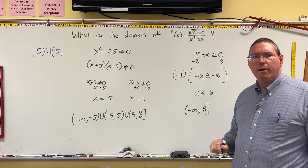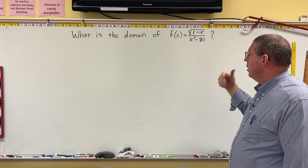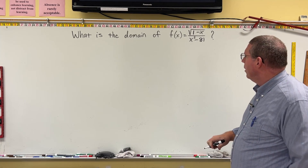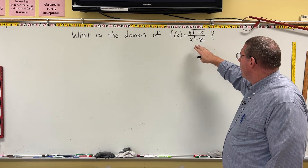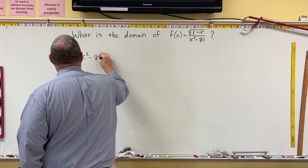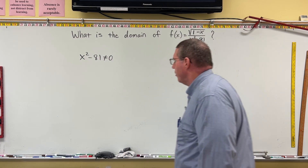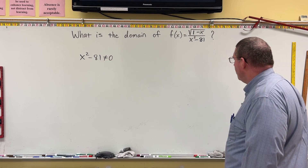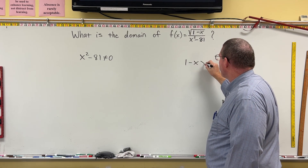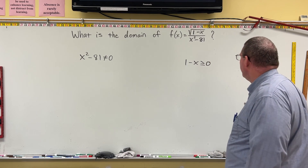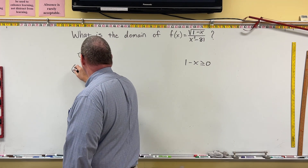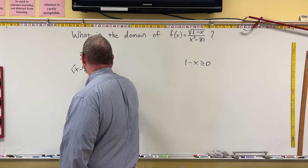Let's do another similar example a little faster. The denominator cannot equal zero, so x² minus 81 cannot equal zero. The numerator has a square root, so 1 minus x has to be greater than or equal to zero. For the denominator, x² minus 81 factors into (x − 9)(x + 9), so that cannot equal zero.